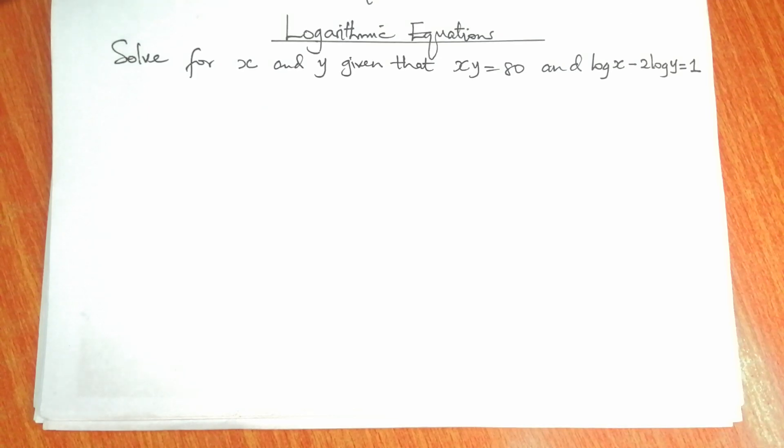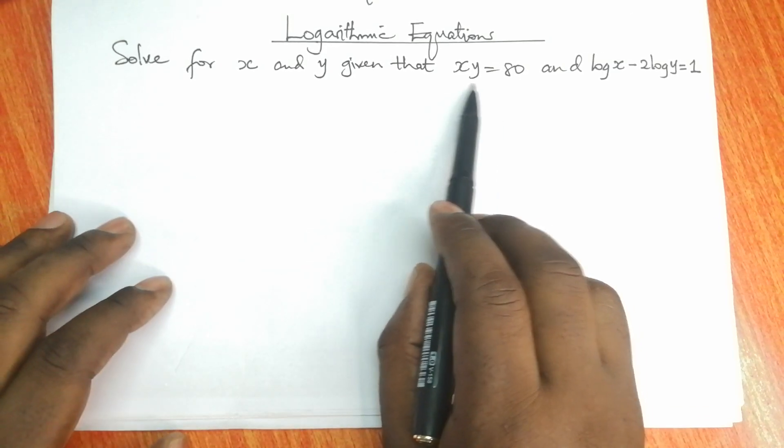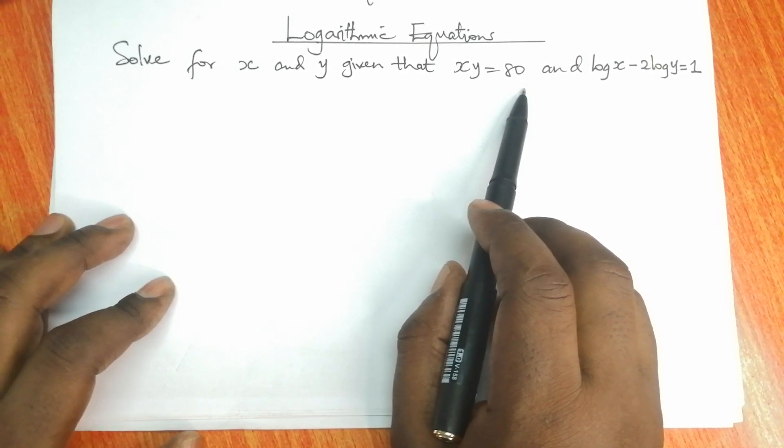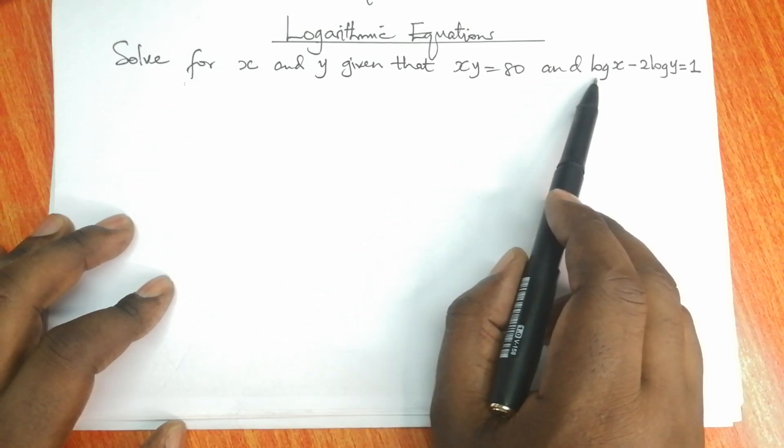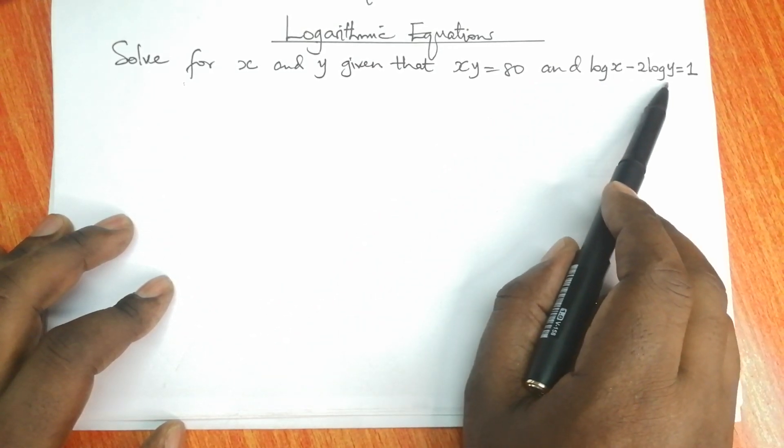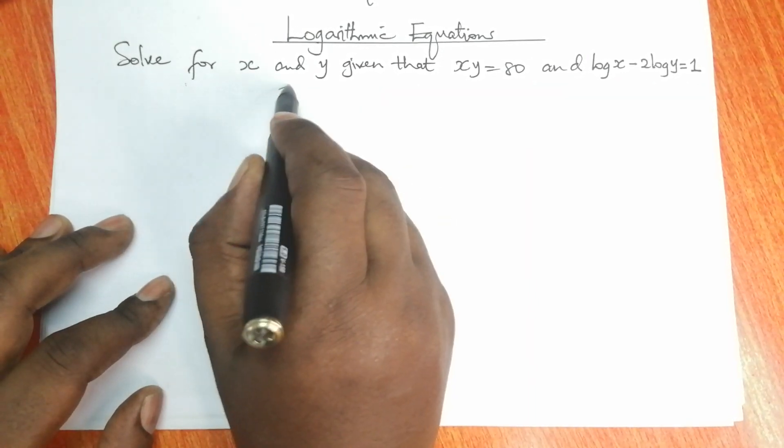Welcome once more. We have a logarithmic equation to solve here. We have two equations that we're supposed to solve simultaneously. We are required to solve for x and y, given that xy is equal to 80 and log x minus 2 log y is equal to 1.